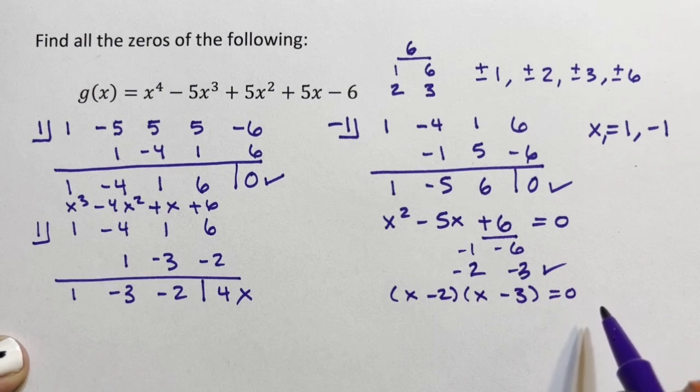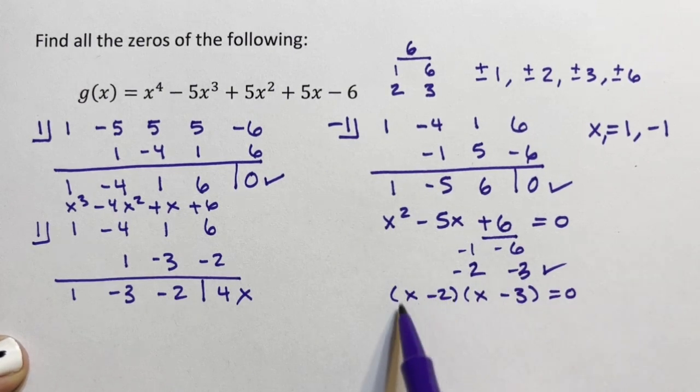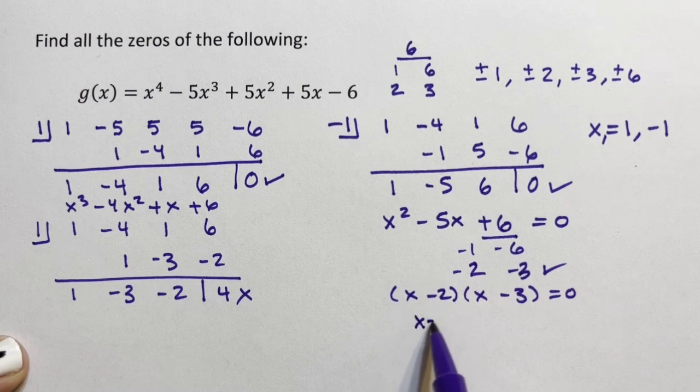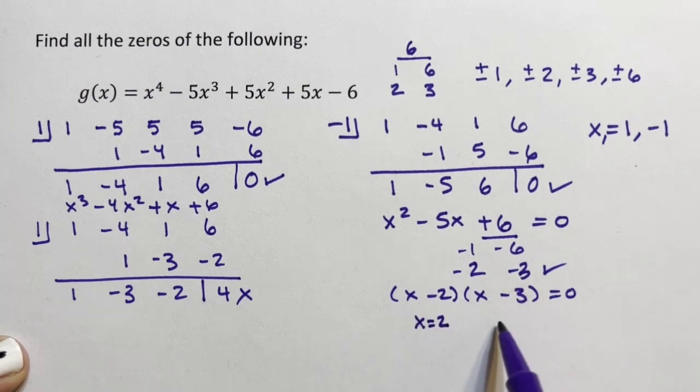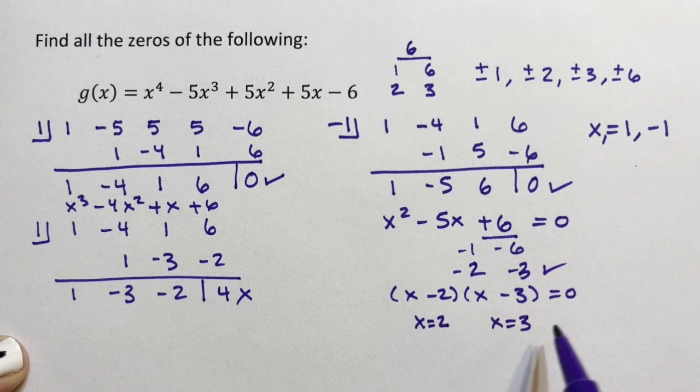And the thing about zero is when two numbers multiply to be zero, one of them has to be zero. x - 2 is zero when x is 2, x - 3 is zero when x is 3. So those are our final two zeros, 2 and 3.